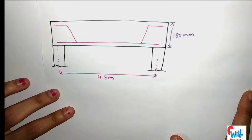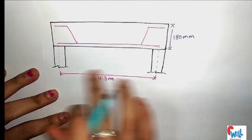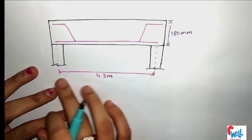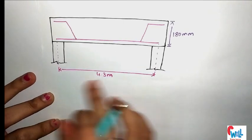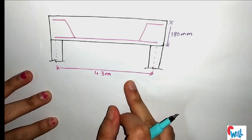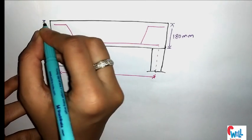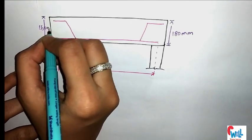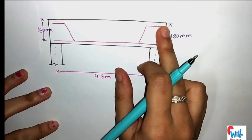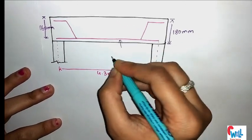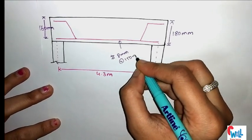Now let's see the cross-section detailing drawing. This shows the two-way slab cross-section along the shorter direction. The center-to-center distance between supports is 4.23 m. Total depth is 185 mm and effective depth is 160 mm. Main reinforcement is 8 mm bars at 150 mm center to center.